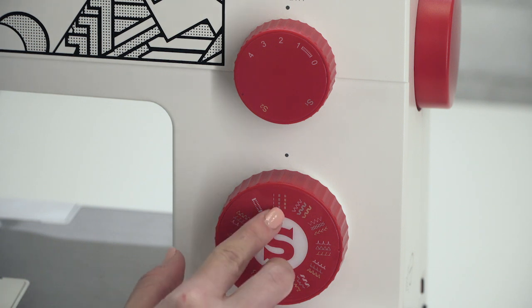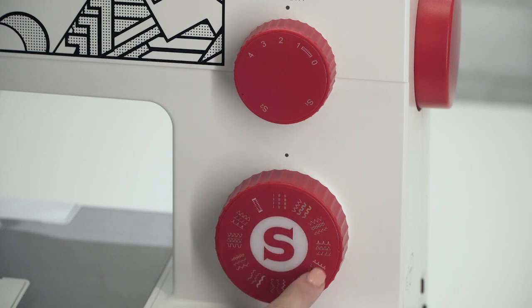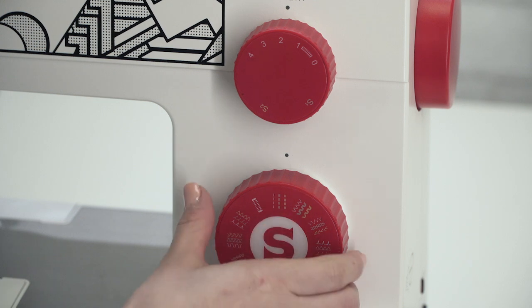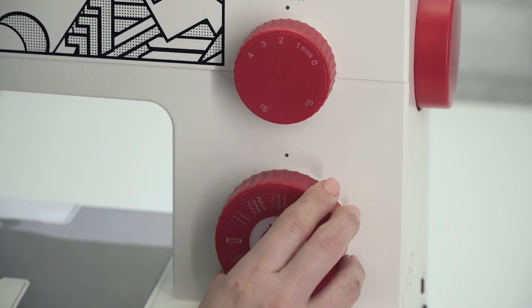When you unbox your machine it should start at a straight stitch. You might notice that each position on the dial has three different options per position. Let's go to the multi-step zigzag and talk about this.